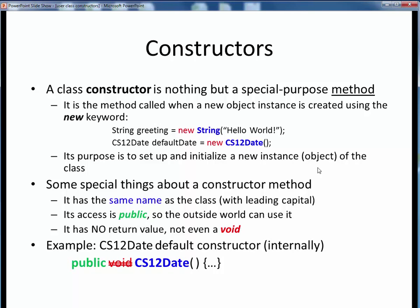Constructor methods have a few special properties. Constructors carry the same exact name as their class, including the leading capital letter. Constructors virtually always have a public access specifier because we want the outside world to be able to create objects of their class type. Finally, and this is a key difference between constructors and regular methods, a constructor's interface has no return value, not even void.